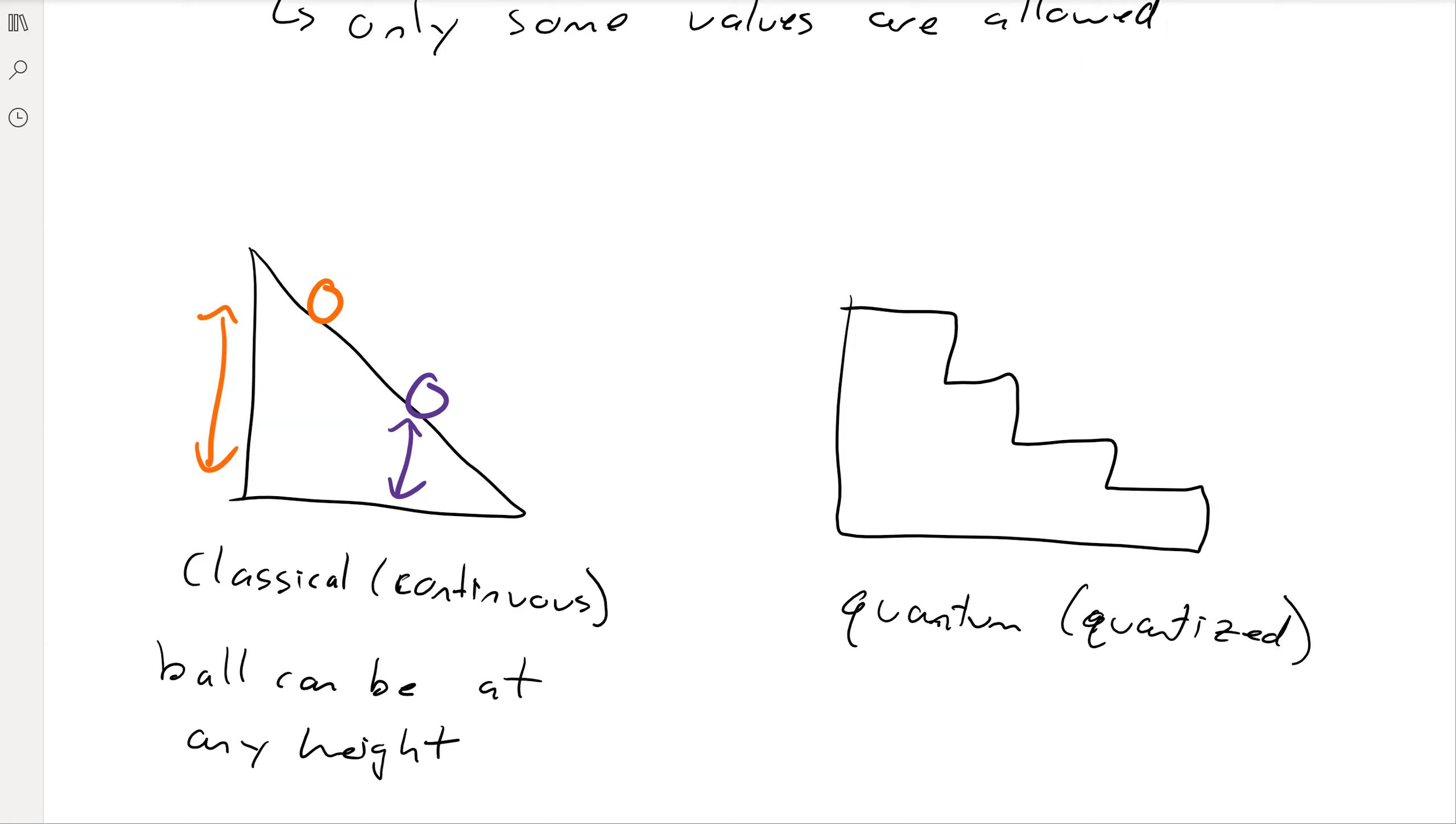And so what that means is that some values are allowed and some are not. So for example, the ball could be up here on this step, the ball could be down here on this step, but the ball is not allowed to be in between.